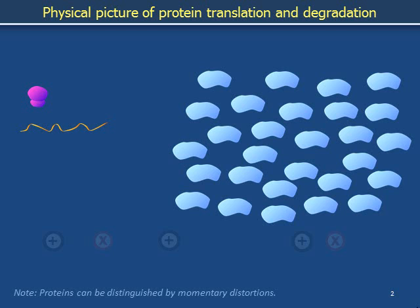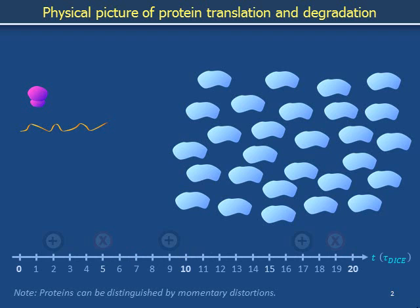The cell in this cartoon starts with 28 copies of blue protein, 1 copy of gold messenger RNA, and a fuchsia ribosome. This is time 0. Over 20 time steps, the molecules will explore various spatial arrangements. The ribosome will occasionally encounter the messenger RNA in a way that allows translation. The proteins will occasionally degrade.